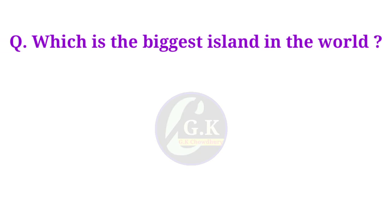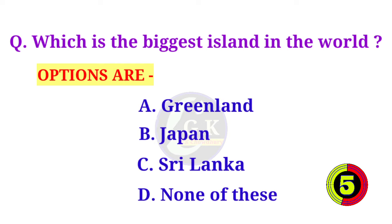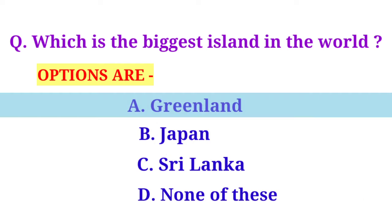Which one is the biggest island in the world? Option A, Greenland, is the correct answer.